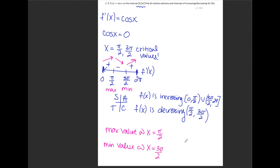To recap, the steps for finding intervals of increasing and decreasing and max and min values are: first find the derivative of the function; set the derivative equal to 0; solve to find the critical values; place those critical values on a number line; test numbers in each interval to find where the first derivative is positive or negative. That number line tells you where f is increasing, where it's decreasing, and where maximum and minimum values occur. That's it — if you have any questions, feel free to leave them in the comments below. Have a great day.